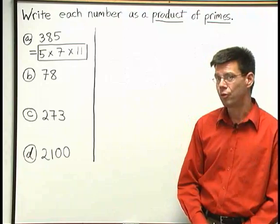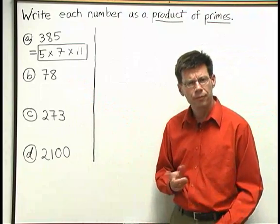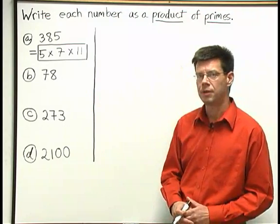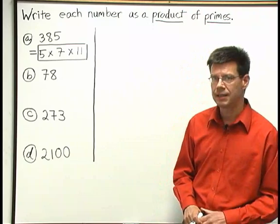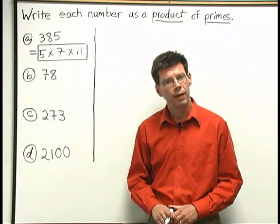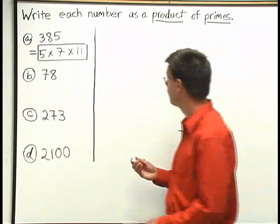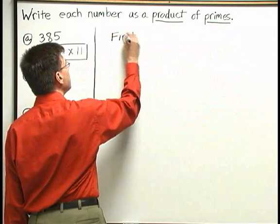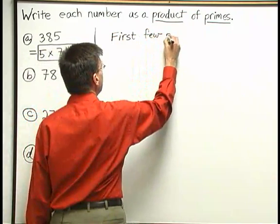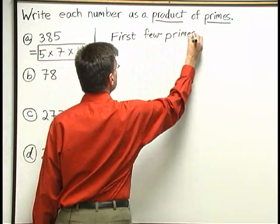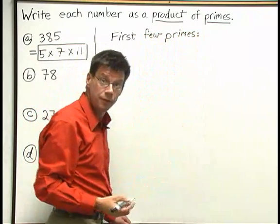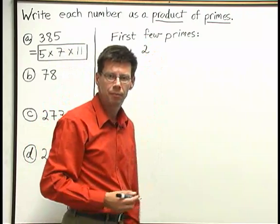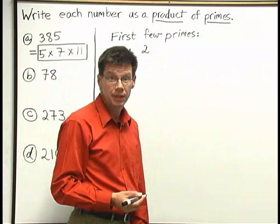The next number we're going to break down is 78. But before we start working on 78, let's talk a little bit about what the first few prime numbers are. I think it's a good idea to memorize the first few prime numbers. Let's list them right here. The very first prime number — the smallest prime number — is 2. 1 is not a prime number; we don't call 1 a prime number for certain technical reasons. 2 is the first one.